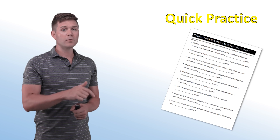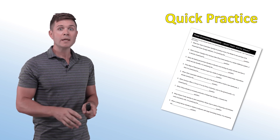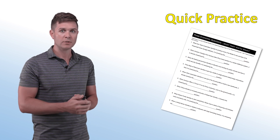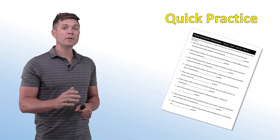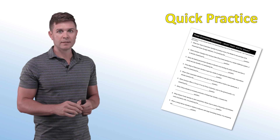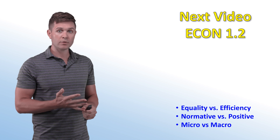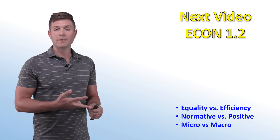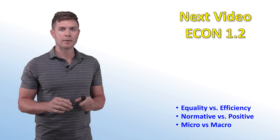In the description below, there's a link to a PDF with nine different decisions being made by companies — each one answering a what, how, or for whom question, with three of each. After doing the practice, make sure you check out the follow-up video to see how well you understand this concept. Also, be sure to check out my next video dealing with equality versus efficiency, normative versus positive statements, and the difference between micro and macro economics. See you guys next time.